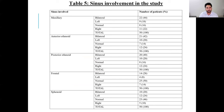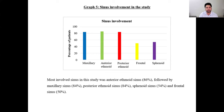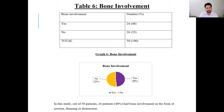Regarding sinus involvement, maxillary sinus bilateral involvement was 22%, anterior ethmoid sinus 21%, posterior ethmoid sinus bilaterally involved 20%, frontal bilaterally 40%, and sphenoid bilaterally involved 10%. The most involved sinus in the study was the anterior ethmoid sinus at 86%, followed by maxillary at 84%, posterior ethmoid sinus at 84%, sphenoid sinus at 54%, and frontal sinus at 50%. Bone involvement was seen in 24 patients (50%), including bone marrow erosion, thinning, and destruction.